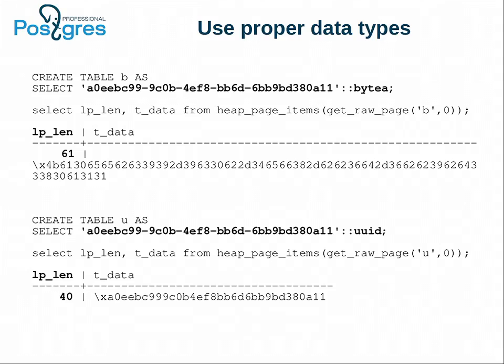Use proper data types. Postgres has a lot of advanced data types, so use them. In one real-life case, we audited the database of a customer after migration from SQL Server, and the PostgreSQL database was much bigger than expected. After investigation, we found that one of the most frequent columns kept a user identifier stored as bytes instead of using the UUID type. After the data type change, the dramatic size difference disappeared.